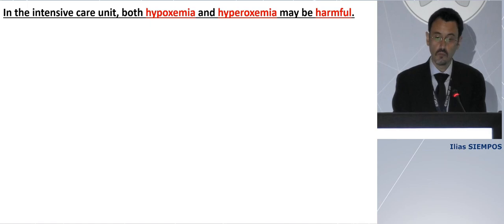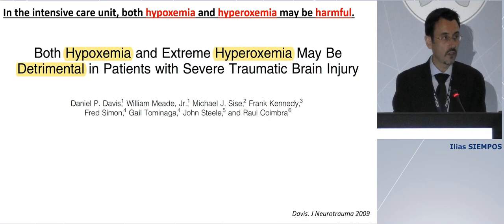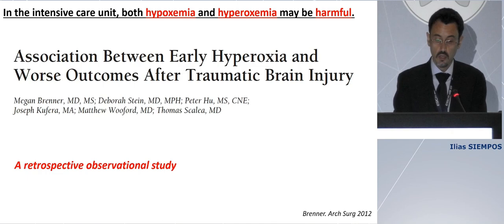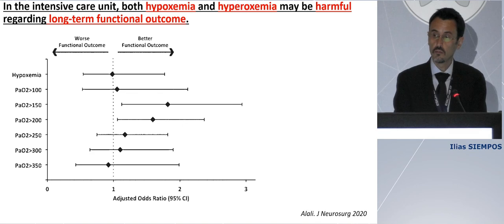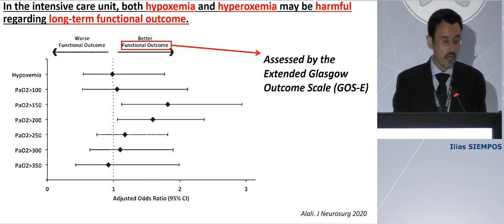So in the intensive care unit, both hypoxemia and hyperoxemia may be harmful — that was actually the title of one observational study — and confirmed by another retrospective observational study showing that hyperoxemia compared to normoxemia is associated with higher mortality. I would also like to mention a secondary analysis of a randomized controlled trial involving 500 patients with severe TBI, where the authors found the same U-shape: hypoxemia and hyperoxemia may both be harmful regarding long-term functional outcome, assessed by the extended Glasgow Outcome Scale.